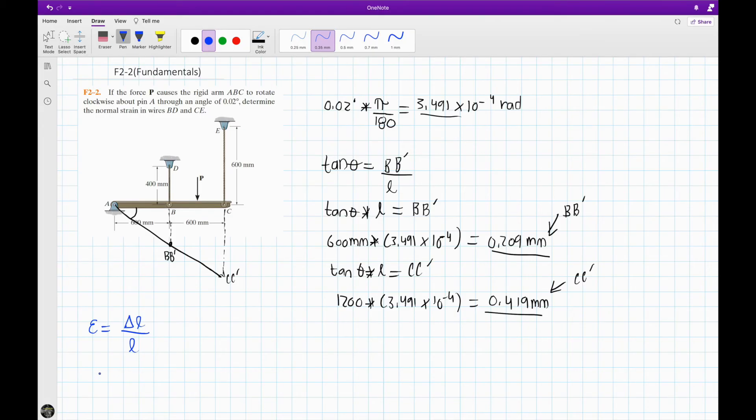Let's do first for the wire BD. That is the one asked. Our BD. We are going to put our BB dash, divided by our original length of BD. And then BB dash, we got 0.209 millimeters. We divide by our original length, which is 400 millimeters. Plug this in the calculator. We get 5.24 times 10 to the -4. And remember, strain doesn't have a unit. So this is our answer for the strain in BD.